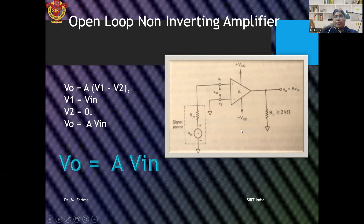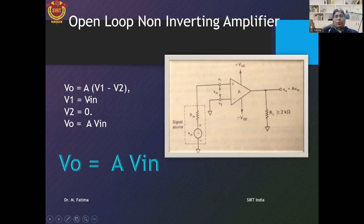VCC and VEE are connected for the supply. V1 is equal to the input voltage VIN. We know that output voltage is equal to A multiplied by (V1 minus V2), where A is the open-loop gain of the op-amp. Since V1 equals VIN and V2 equals 0 (grounded), putting these values in the equation gives V0 = A·VIN. This is the output voltage of the open-loop non-inverting amplifier, and the positive sign means the output is in phase with the input signal.